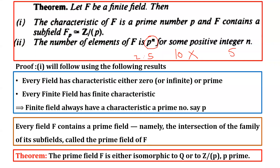But if you ask whether there is a field with 8 elements, the answer is yes, because 8 can be written as the power of a single prime: 2 raised to power 3. So a finite field with 8 elements exists, but one with 10 elements does not. Any natural number whose prime factorization requires two or more distinct primes cannot be the order of a finite field. This often appears as an exam question: construct a field with ten elements — the answer is it does not exist, since 10 is not of the form p raised to power n.